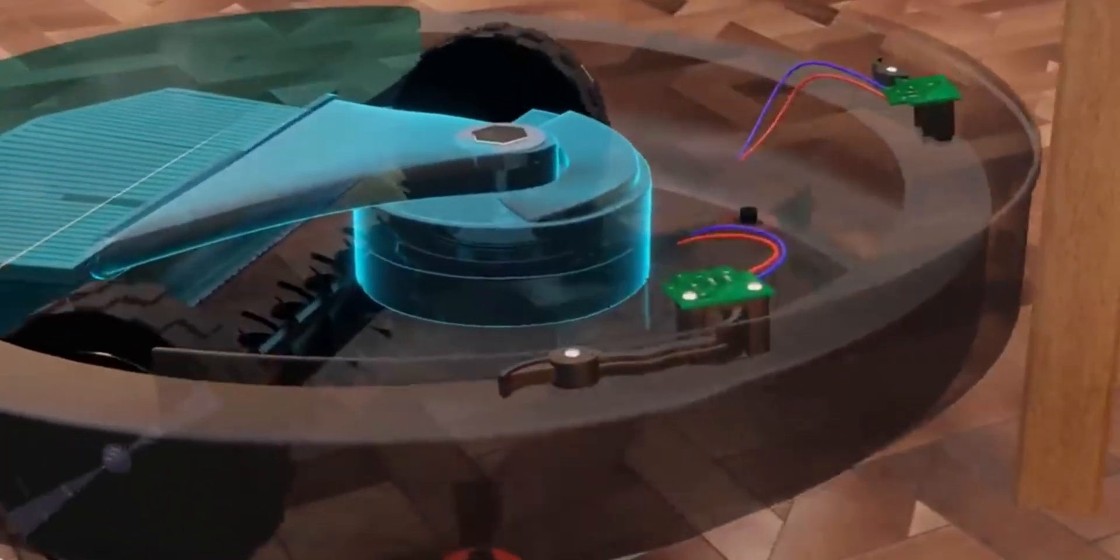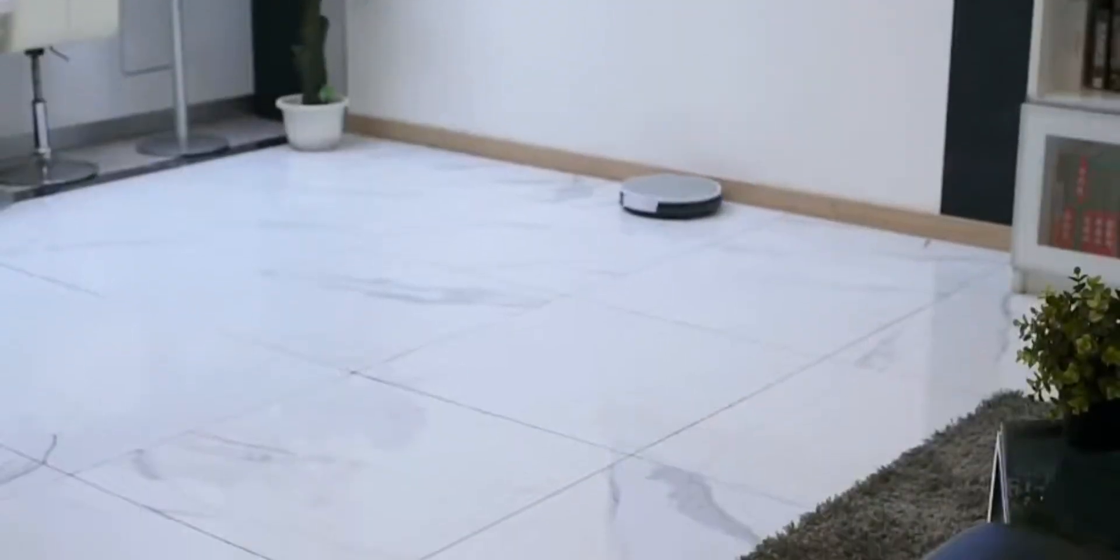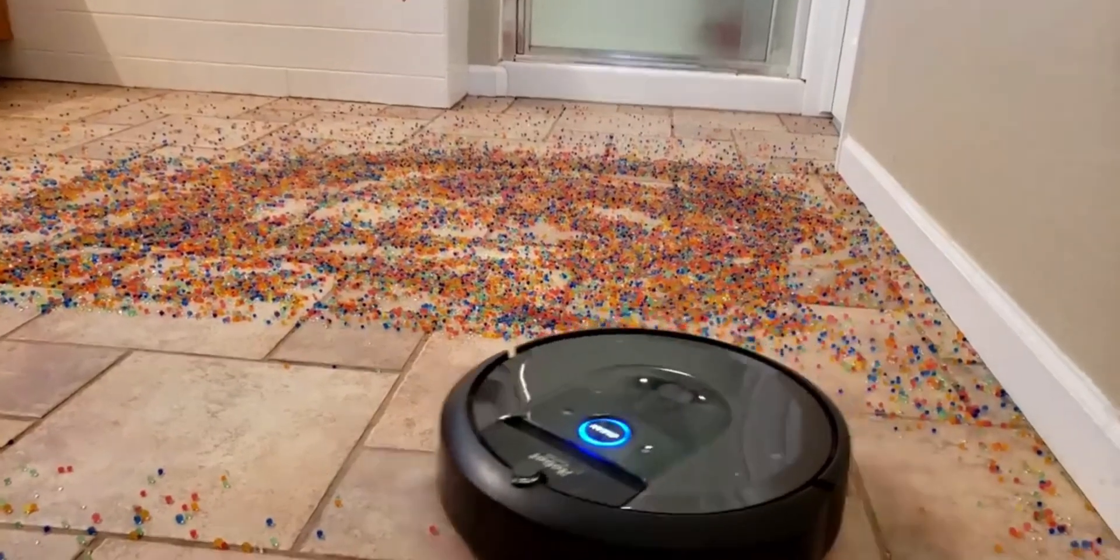Robots can't tell the difference between a chair and a wall, and they are designed to turn around when they hit a wall, so our robot will turn around and leave this area dirty.